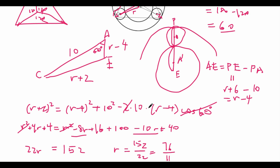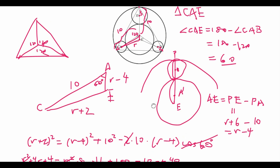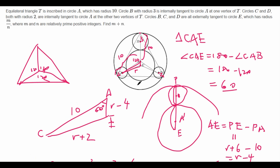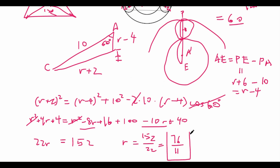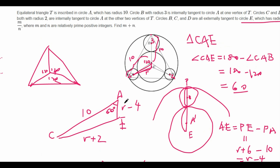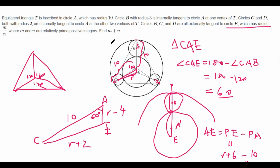So R equals 76/11. Let's think about what we just did — we found the value of R, which is exactly the radius of circle E that the problem asks for. The radius is 76/11, which is in the format m over n with m=76 and n=11 relatively prime. So our final answer is 76 plus 11, which equals 87. We would bubble in 0, 8, 7, and we'd be done.